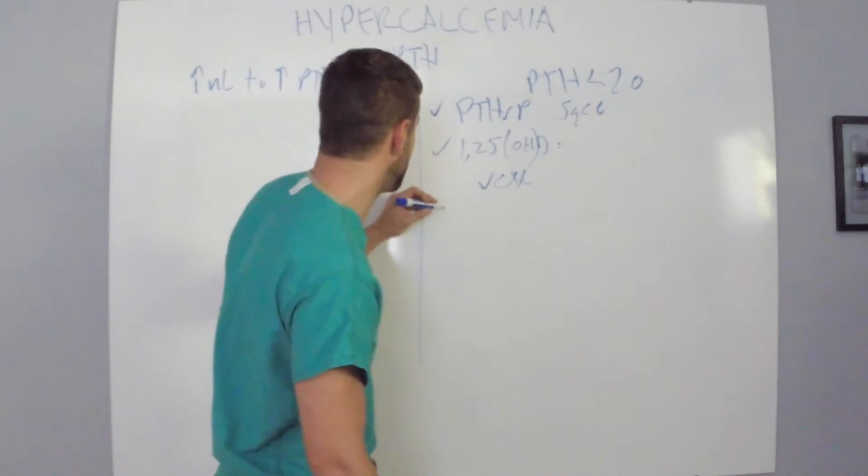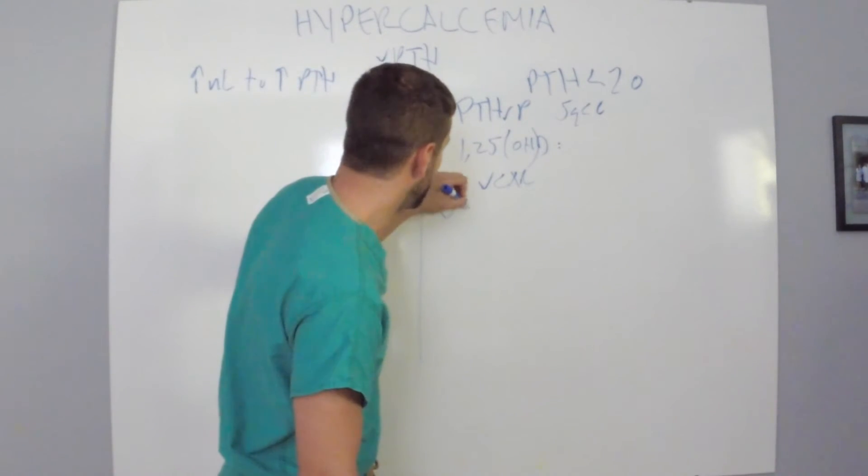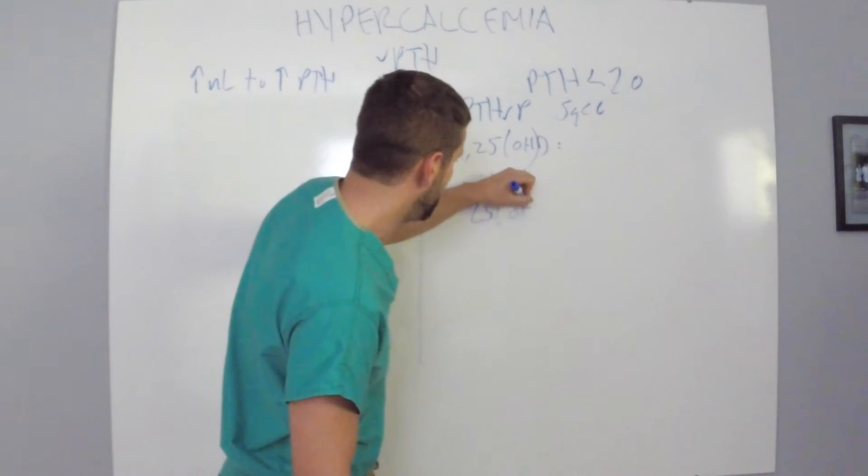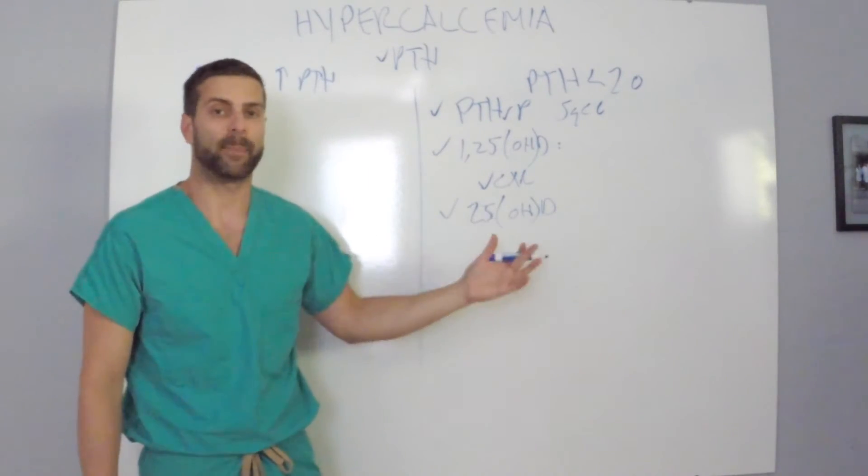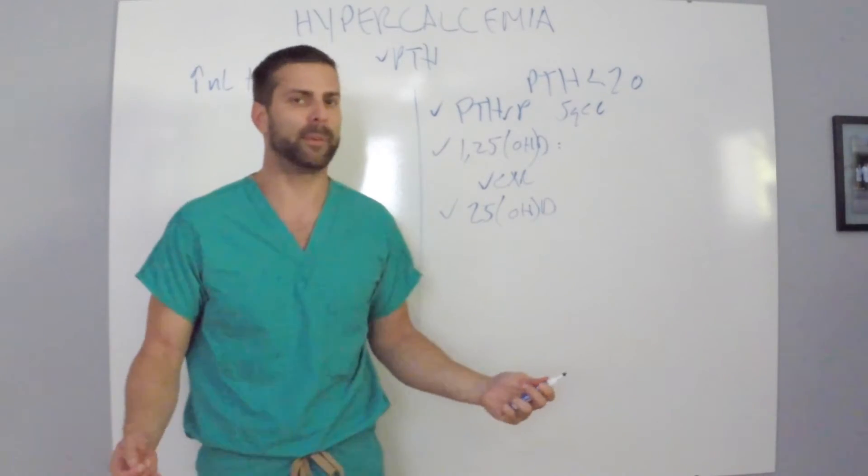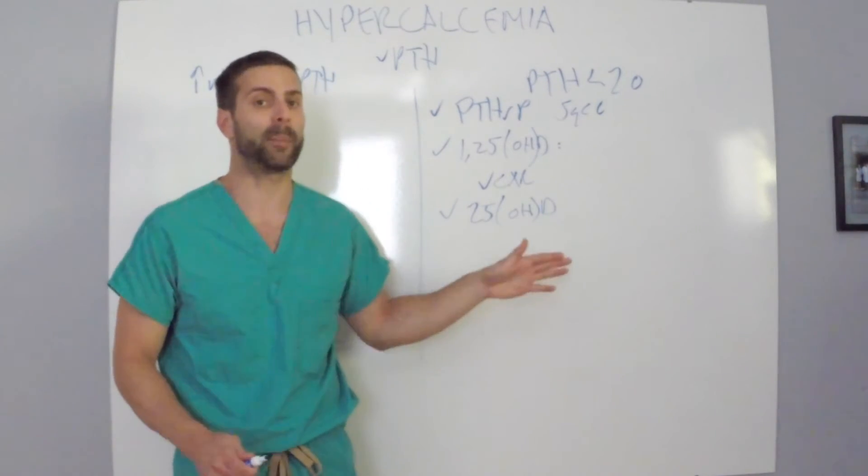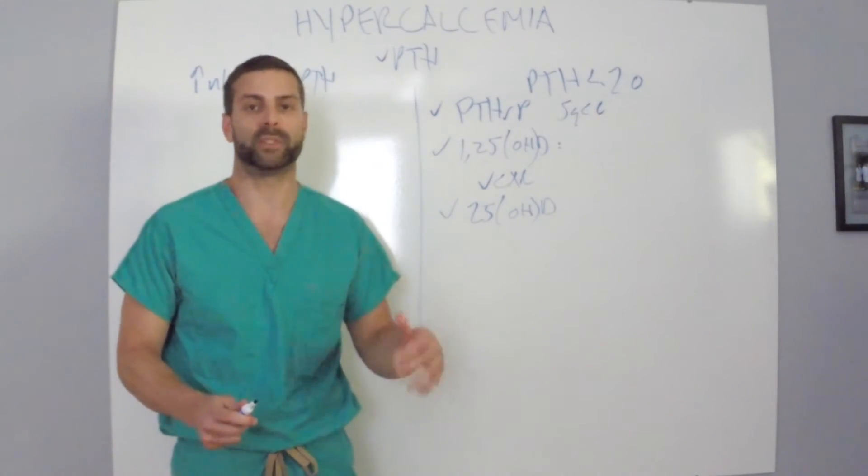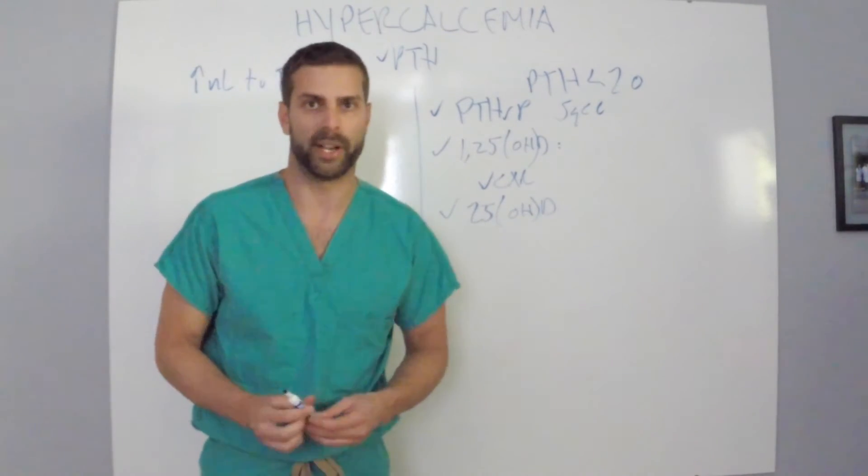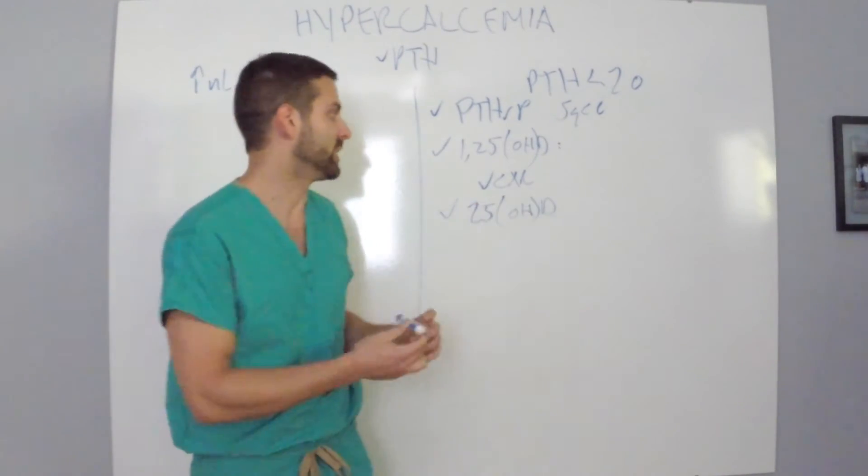The next thing you can go ahead and check is for an actual 25-hydroxyvitamin D level, and then you would see this elevated in people who have vitamin D excess. Actually, the most common vitamin deficiency is vitamin D, but there are people who have vitamin D excess. One of the things I read said people who take greater than 4,000 units per day. So that's vitamin D toxicity.